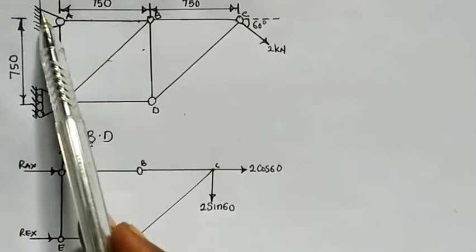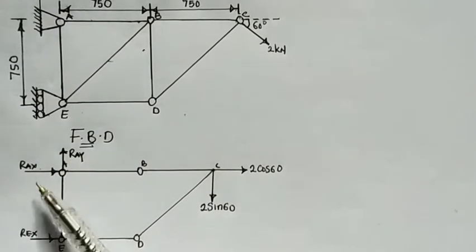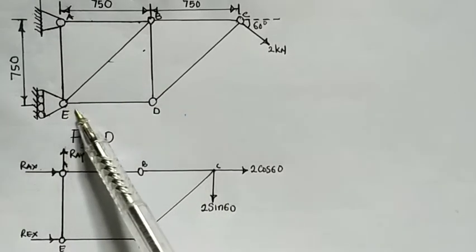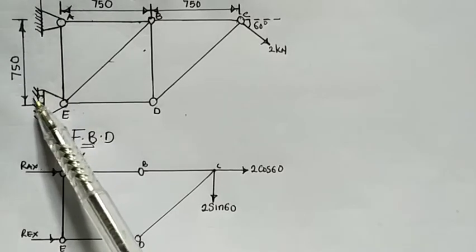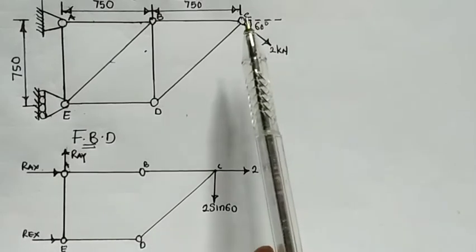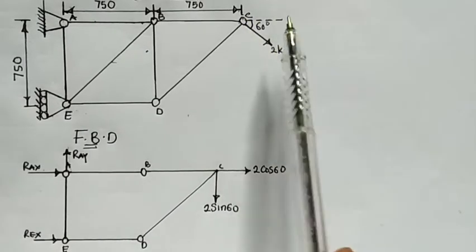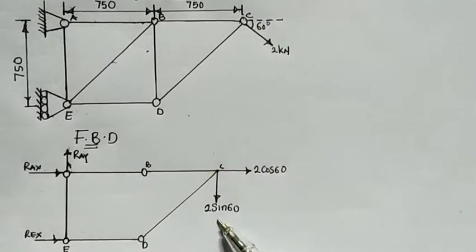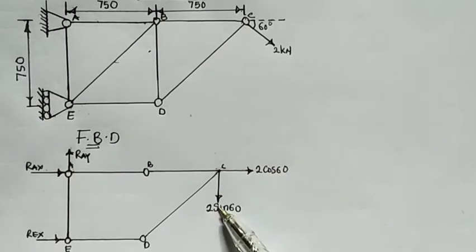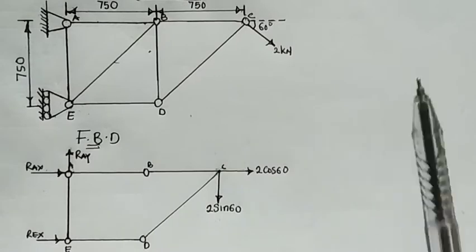At point A we have a hinge or pin support, which always has two reactions: one along the x-axis and one along the y-axis. At joint E we have a roller support, which has just one reaction. We also have an inclined force of 2 kilonewtons at an angle of 60 degrees, which we resolve into a horizontal component and a vertical component.